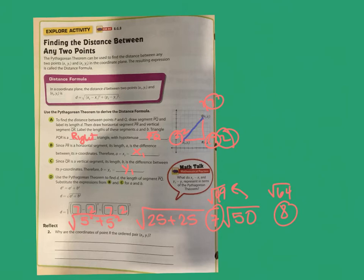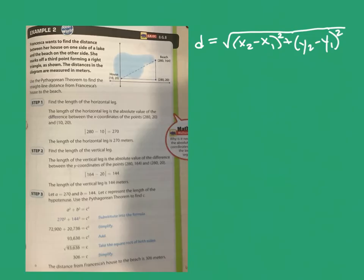So we used the distance formula — it's just a version of the Pythagorean theorem that allows you to do all that without having to put things down on a graph. Francesca wants to find the distance between her house on one side of the lake and the beach on the other side. She marks off a third point forming a right triangle, and the distances in the diagram are measured in meters. Notice we don't have things we can just count, so we're going to use the Pythagorean theorem to find the straight-line distance from Francesca's house to the beach.